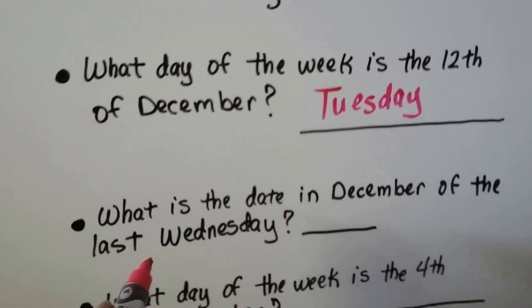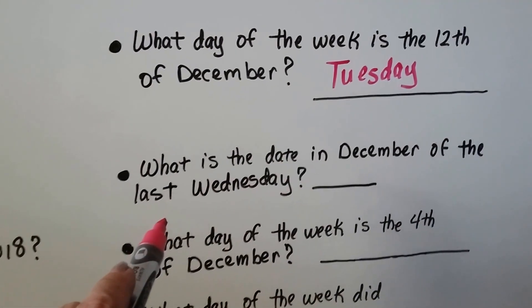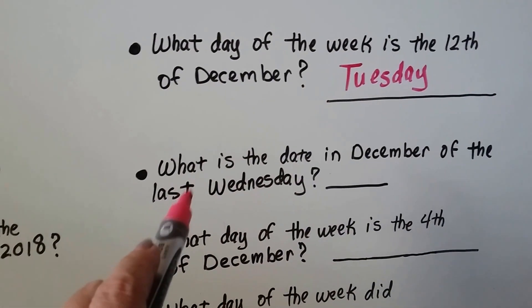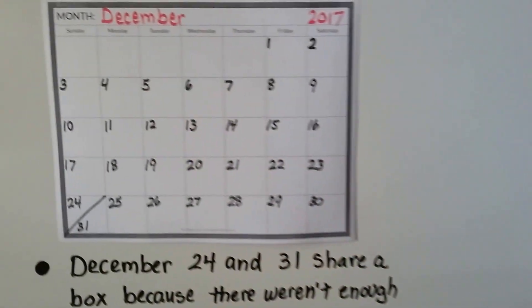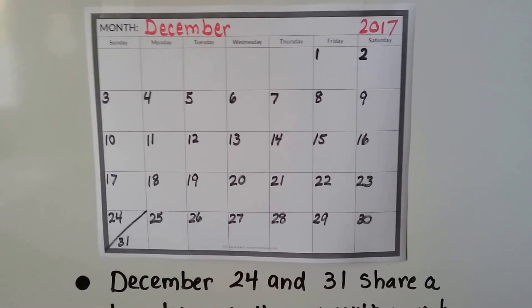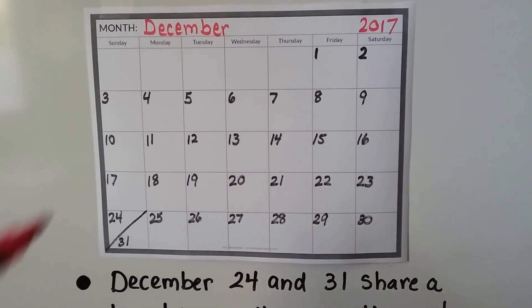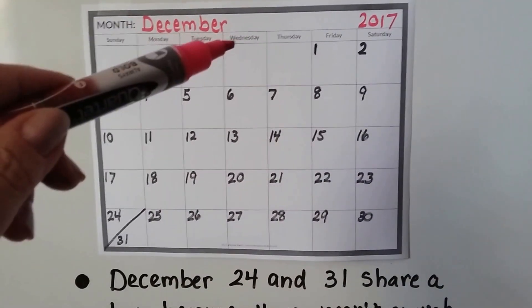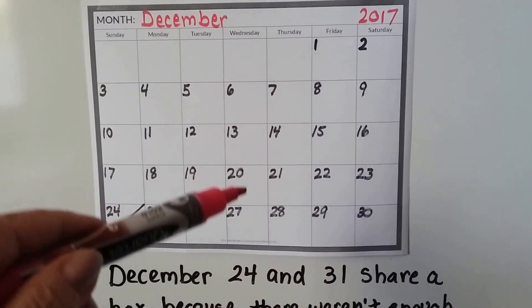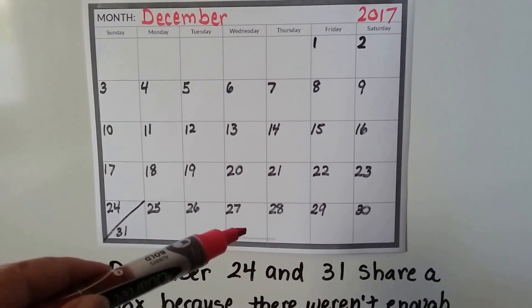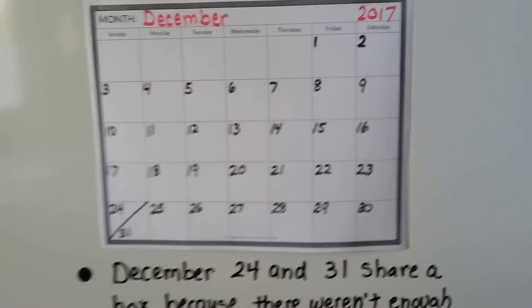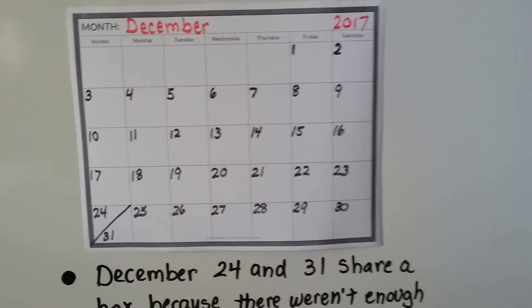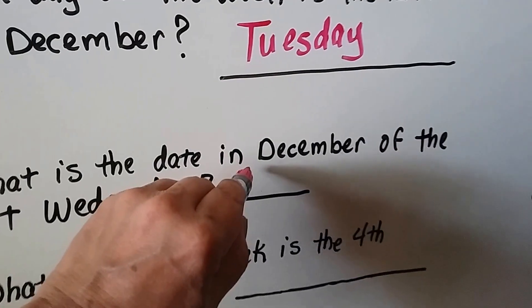What is the date in December of the last Wednesday? Here's the December calendar. We look for Wednesday and go all the way down to the last one. We see that that's the 27th — that's the last Wednesday.